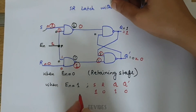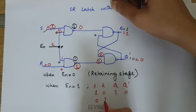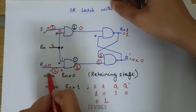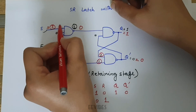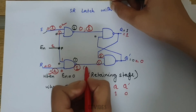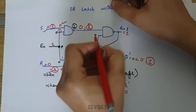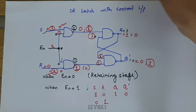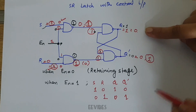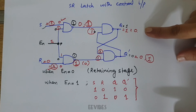Similarly, keeping enable=1, when you make S=0 and R=1, it forces output equal to 1. Then 1,1 produces output equal to 0. This 0 forces this NAND gate to produce output equal to 1. This 1 is fed back, and 1,1 produces output equal to 0. In this way, output Q is in the reset state and Q bar equals 1. This is the simple operation of the SR latch using the NAND gate.